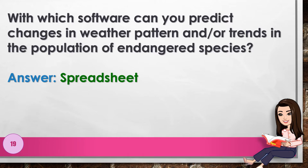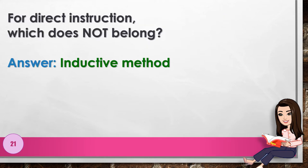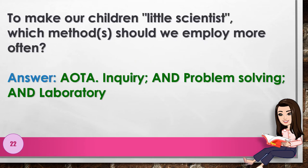Number 18: With a computer, you can organize information about trees and planets. Which tool should you use? Answer: database. Number 19: With which software can you predict changes in weather patterns and/or trends in the population of endangered species? Answer: spreadsheet. Number 20: Which is least exploratory in nature? Answer: deductive method.